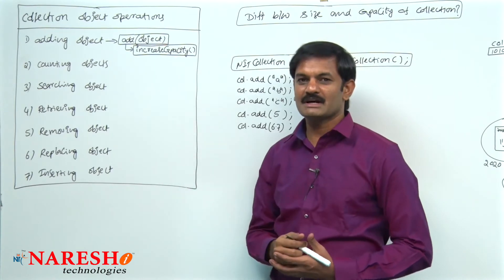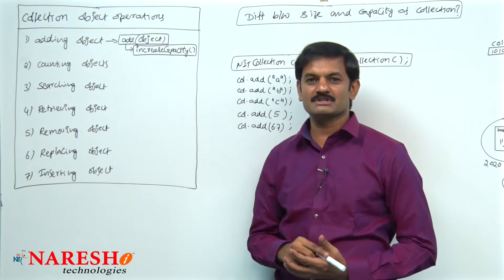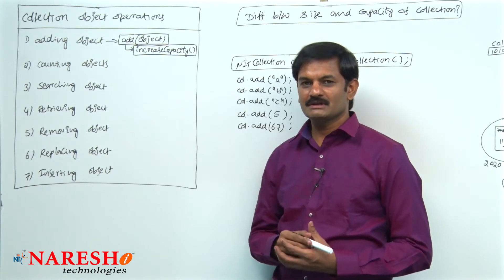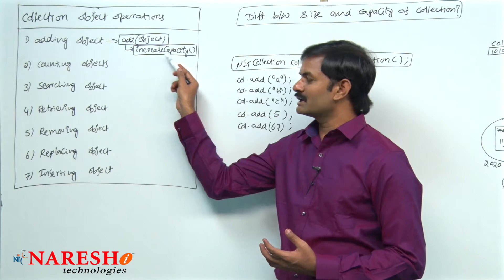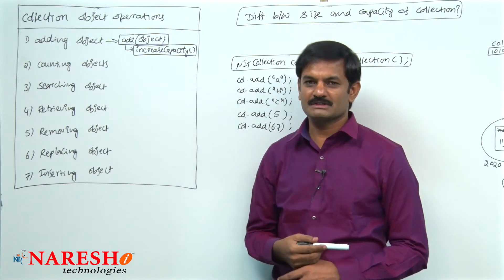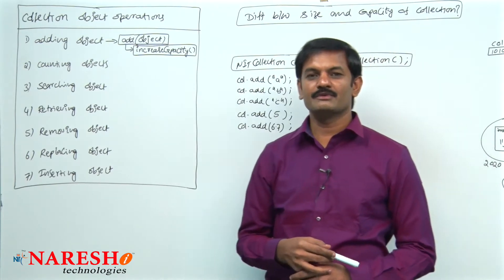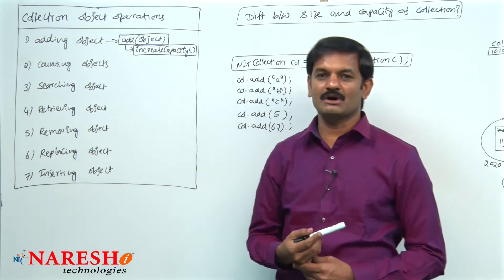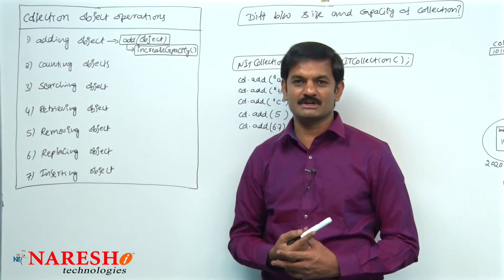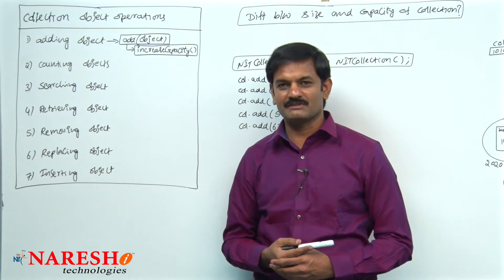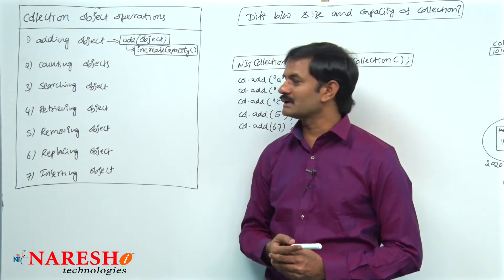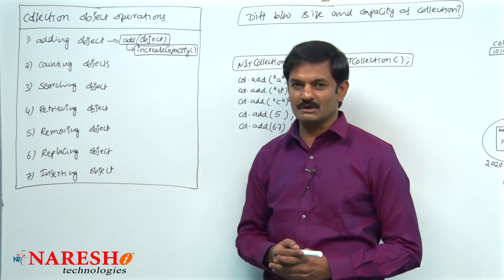The addObject method starts adding objects to the collection object's background array. The moment the size reaches its capacity, it internally calls the increaseCapacity method for increasing capacity. That is the point we discussed in the last session. In this session we want to continue adding the next operation called counting objects — how many objects are available in the custom collection.